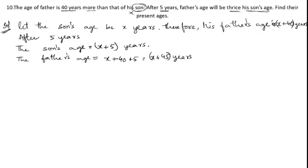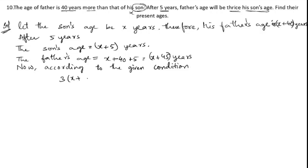Now, according to the given condition: after five years, the father's age will be thrice — three times — his son's age. So three times x plus 5 equals x plus 45. That gives us three into x plus five equals x plus 45.